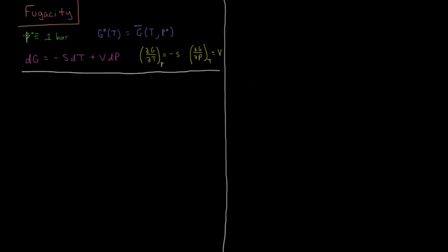The standard pressure P0 is equal to 1 bar of pressure, which is very close to 1 atmosphere. So our standard molar Gibbs energy, as a function of temperature, is the molar Gibbs energy at that temperature and at the standard pressure of 1 bar — a fixed pressure — and it remains a function of temperature. From the differential of Gibbs energy, dG = -S dT + V dP, the partial derivative of molar Gibbs energy with respect to pressure is equal to the molar volume of the gas.